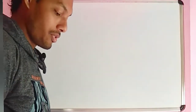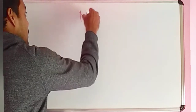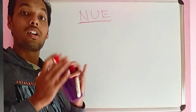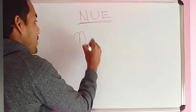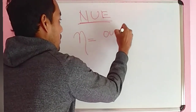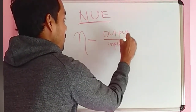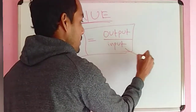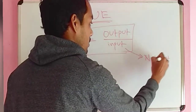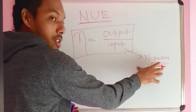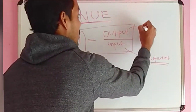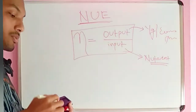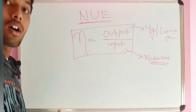So what is nutrient use efficiency? In the previous video when I was talking about water use efficiency, I told you that efficiency means output upon input. So here we are talking about nutrient use efficiency — what we are applying is the input, that is nutrient source. Suppose we are applying fertilizer, organic manure, NPK — that is the nutrient. And what is our output? That is our economic produce or yield of the grain.